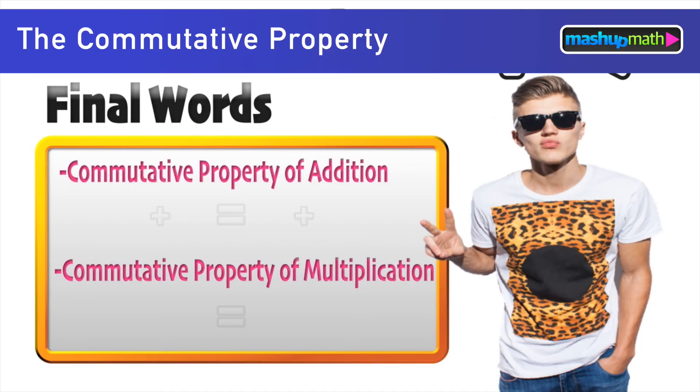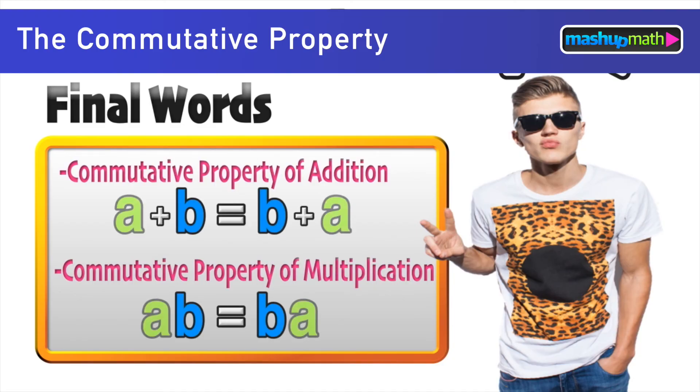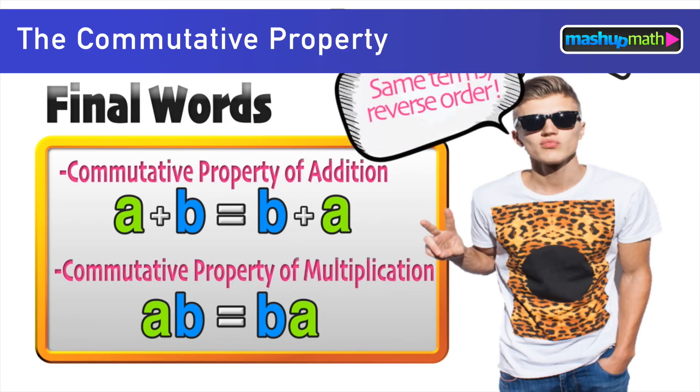Some final words here on the commutative property. We know what the commutative property of addition and the commutative property of multiplication look like. And the main thing to remember here is that it is the same terms in reverse order.